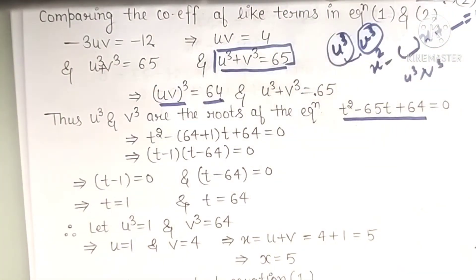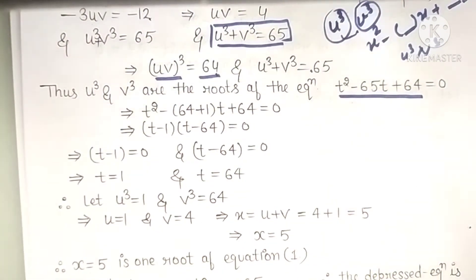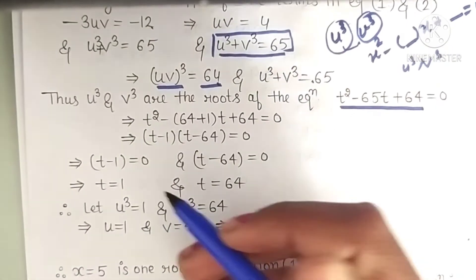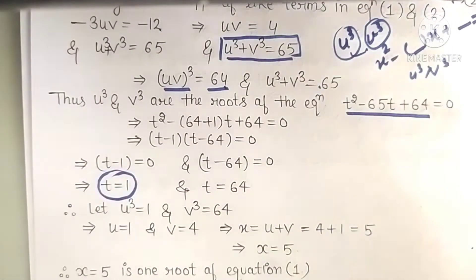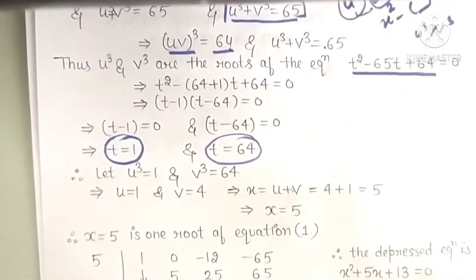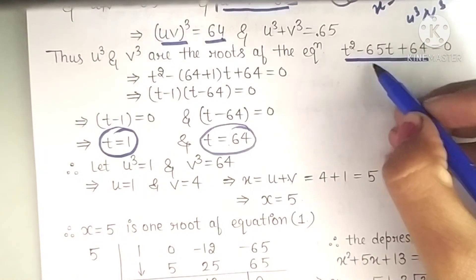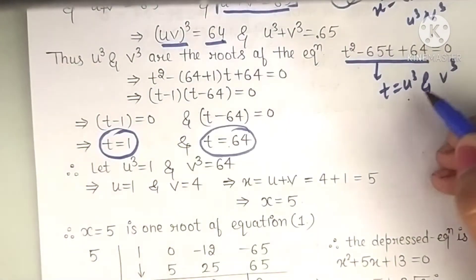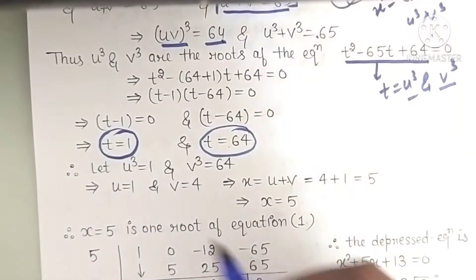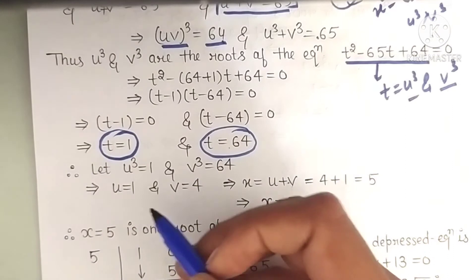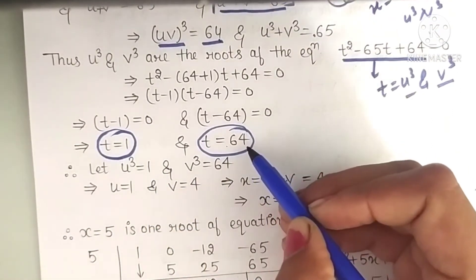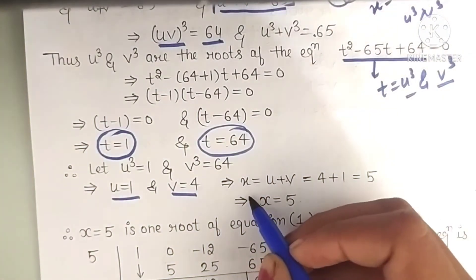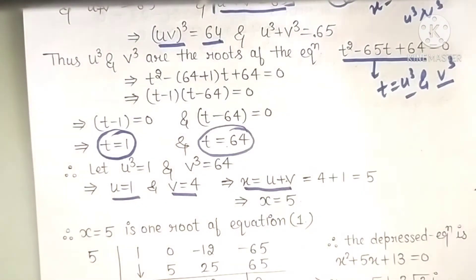We can directly factor this quadratic equation. Factoring 64: factors give us t = 1 and t = 64. These are the values of u³ and v³. So u = 1 and v = 4, giving u plus v = 5. So we got x = 5 as a root of the cubic equation.